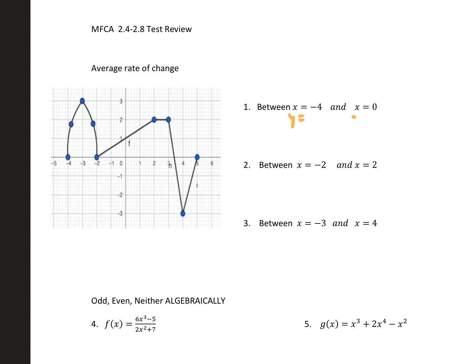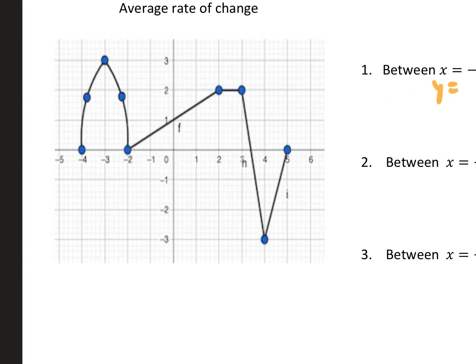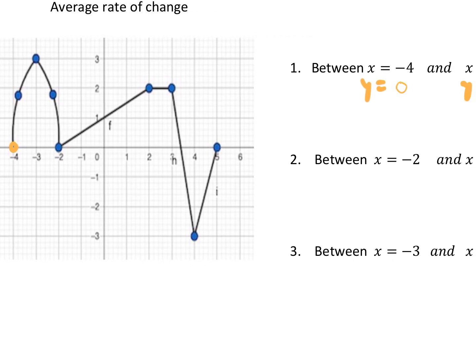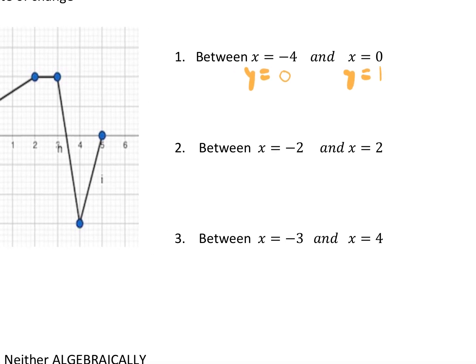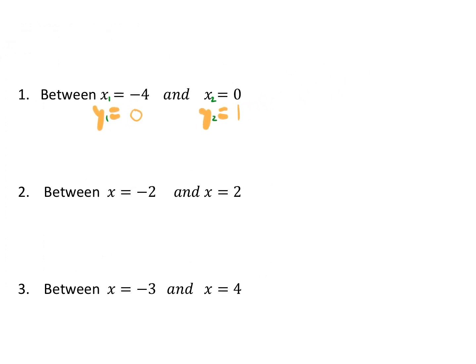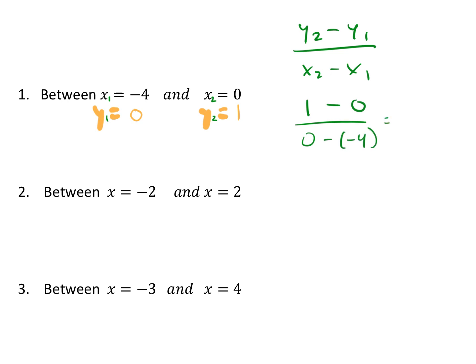We want to find the y for each of these. When x is negative 4, our y is 0. And when x is 0, our y is 1. We call our first point (x1, y1) and the second point (x2, y2) — do it in the order it gives you. The formula for rate of change is y2 minus y1 over x2 minus x1. Plugging in: 1 minus 0 over 0 minus negative 4. Be super careful with your signs — a lot of mistakes on the quiz were sign errors. So we get 1 over 4, which is 1/4.